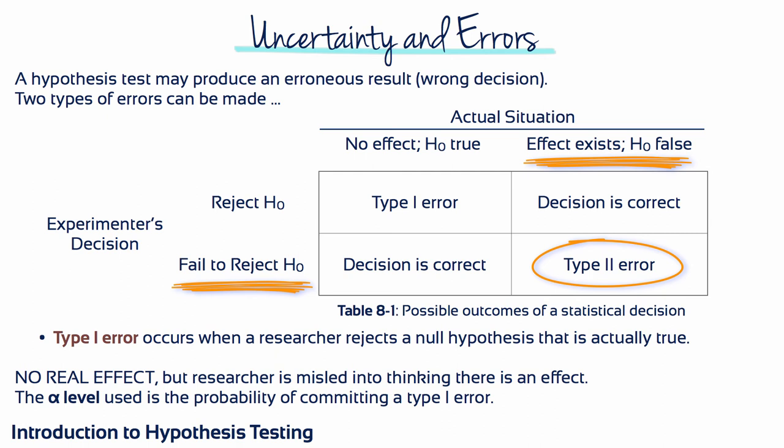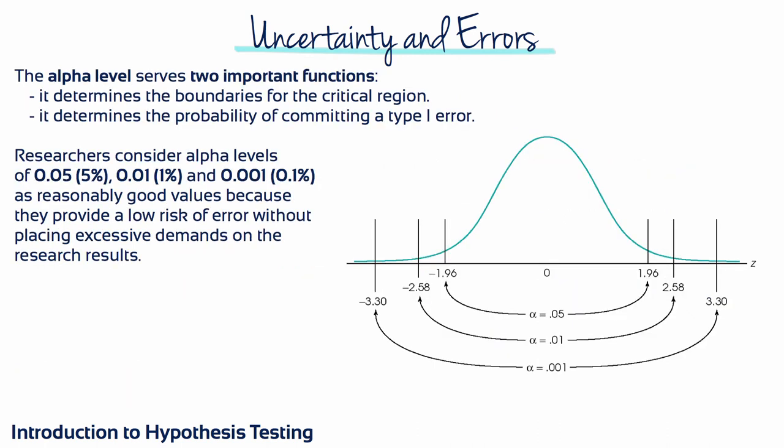Unlike a type 1 error, it's impossible to determine a single exact probability value for a type 2 error. Instead, the probability of a type 2 error depends on a variety of factors and is therefore a function rather than a specific number. The probability of a type 2 error is represented by the Greek letter beta. The alpha level serves two important functions: it determines the boundaries for the critical region, and it determines the probability of committing a type 1 error. Researchers consider alpha levels of 5%, 1%, and 0.1% as reasonably good values because they provide a low risk of error without placing excessive demands on the research results.